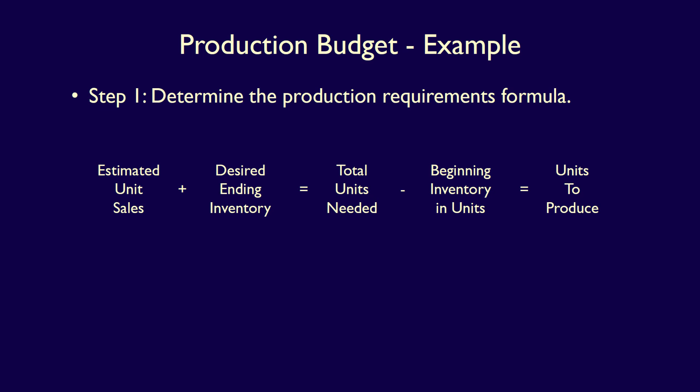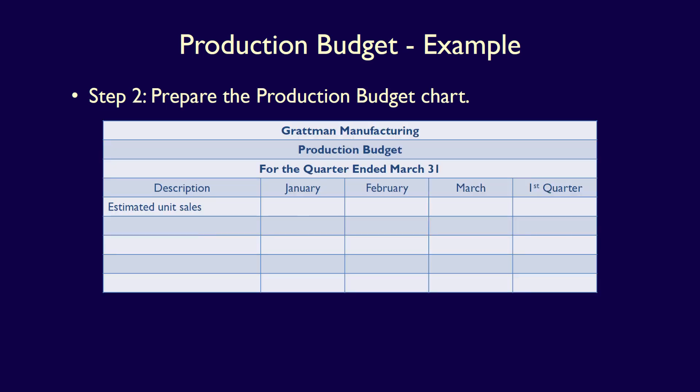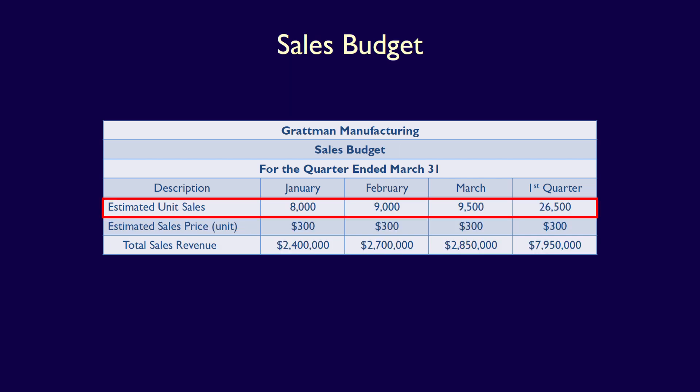We can now apply our formula from step 1. Estimated unit sales plus desired ending inventory equals total units needed. Total units needed minus beginning inventory in units equals units to produce. We apply this formula to our chart in the description column: estimated unit sales in the first row, desired ending inventory in the second row, their sum as the total units needed in the third row, beginning inventory in units in the fourth row, and units to produce in the fifth row. We start by filling out the first row — the estimated unit sales — which we get from the sales budget we already completed.